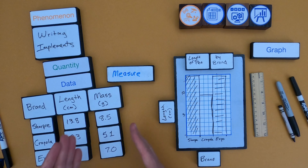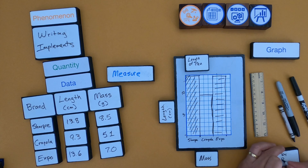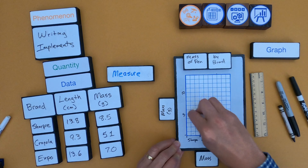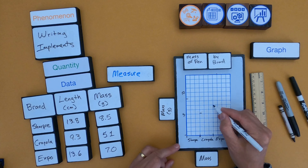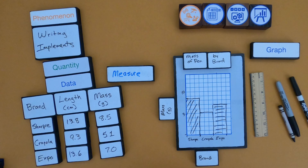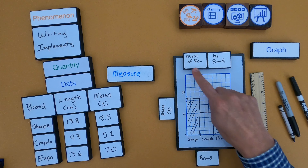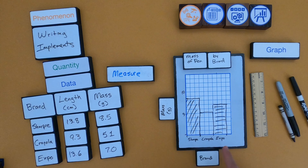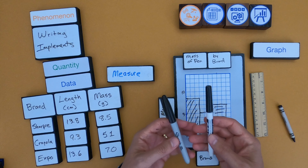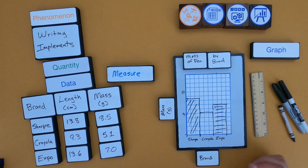The next thing I want to do is create a graph of the mass. I've got mass on the y-axis, brand on the bottom, and a title: 'Mass of Pen by Brand.' You can see that even though the Sharpie and the Expo are really close in length, the Sharpie is a lot heavier than the Expo. Holding them in your hand, it's hard to tell the difference in their mass — that's why it's important to have an electric balance to get accurate data.